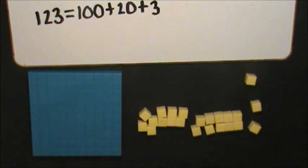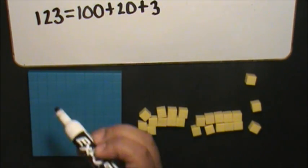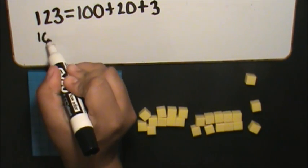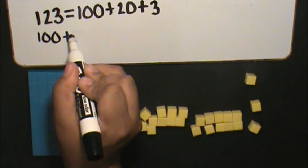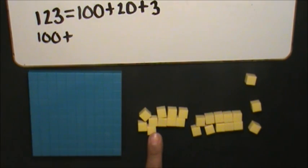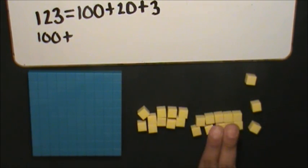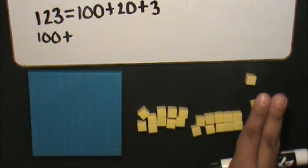Next, I will represent the number in expanded form. The value of 1 hundred is 100. The value of each one is 1 and I have 10, 20, 21, 22, 23.